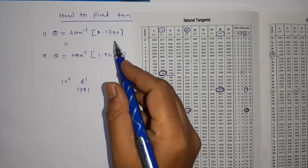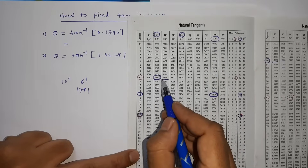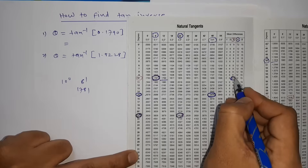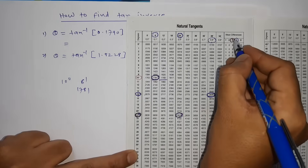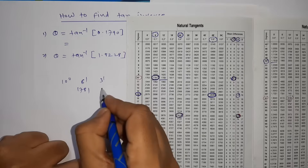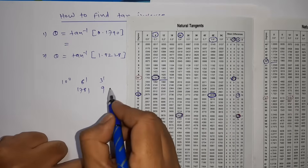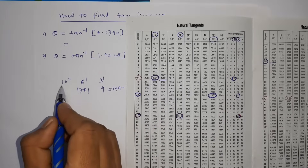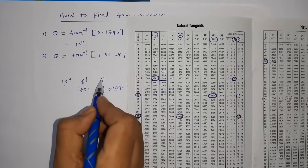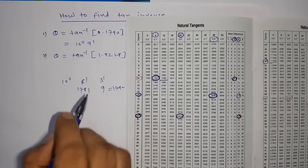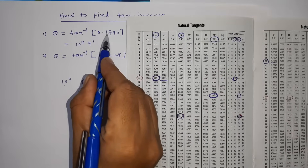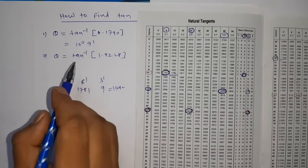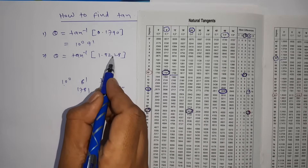The difference is 9, so I need to check the mean difference. I found 9 in the mean difference column at 3 minutes. So 1781 plus 9 gives 1790 — that is 6 minutes plus 3 minutes equals 9 minutes, and the degree is 10. So tan inverse of 0.1790 is 10 degrees 9 minutes.